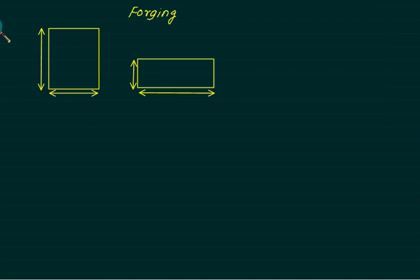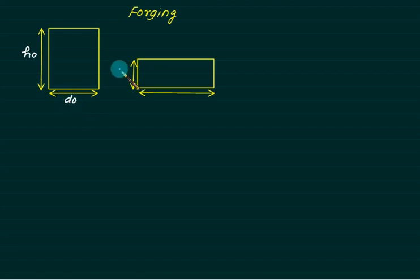In forging, the initial billet has a height H0 and initial diameter D0. The final height equals HF and final diameter equals DF. These are the key dimensional parameters used throughout forging analysis.